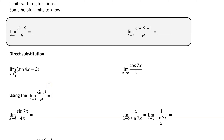These are some introduction to limits with trig functions. We have two special ones to know. The limit as theta approaches 0 of sine theta over theta is 1. And the limit as theta approaches 0 of cosine theta minus 1 over theta is 0.